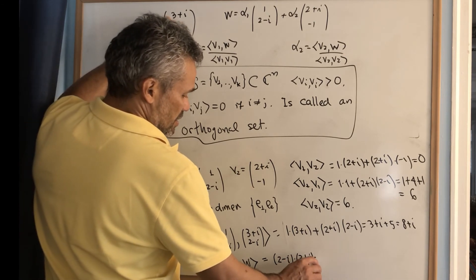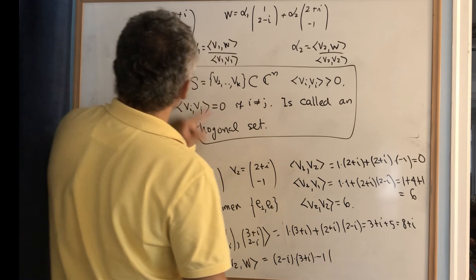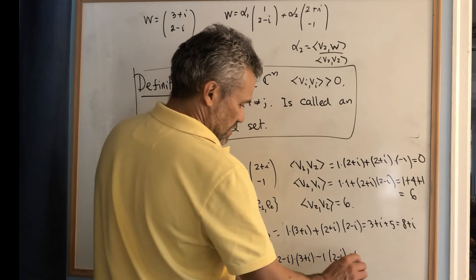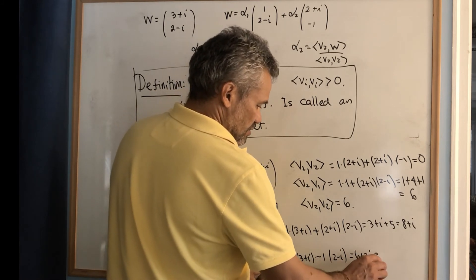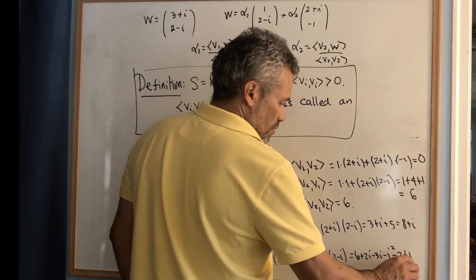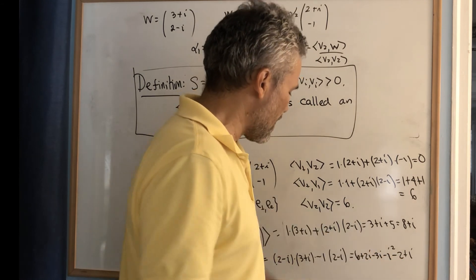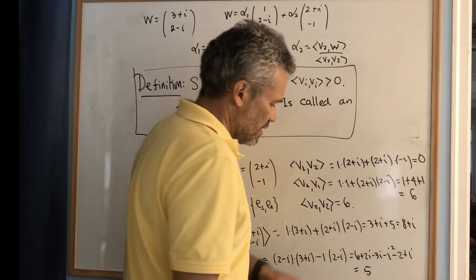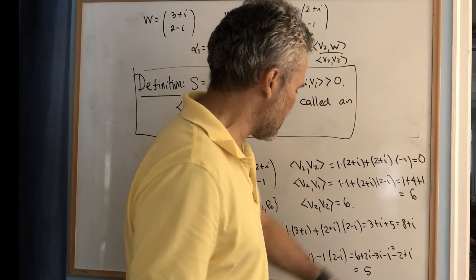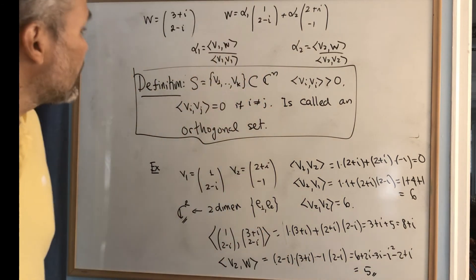Continuing the calculation with the remaining terms: 6 + 2i − 3i − i² − 2 + i. Collecting: 6 + 1 − 2 = 5, and 2i − 3i + i = 0. So this dot product equals 5.